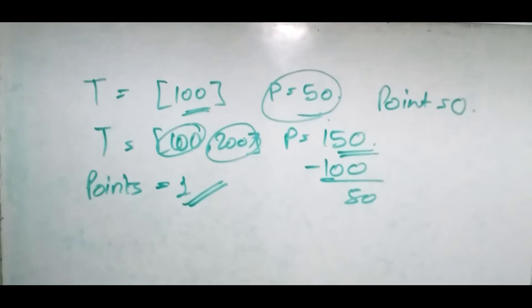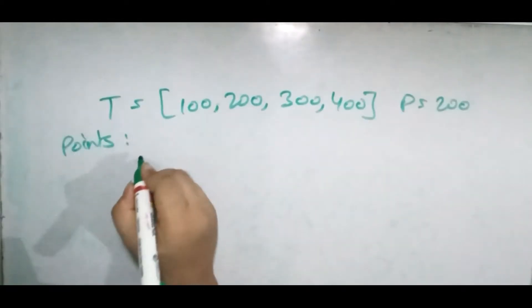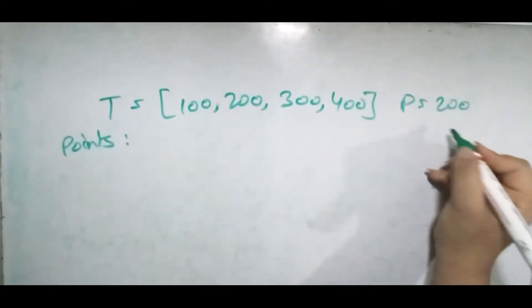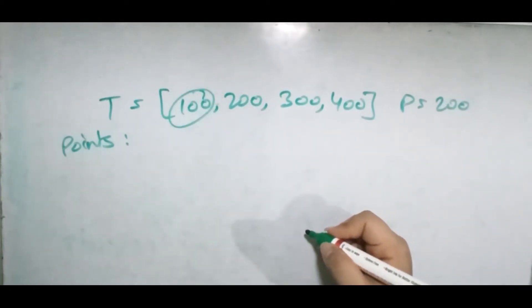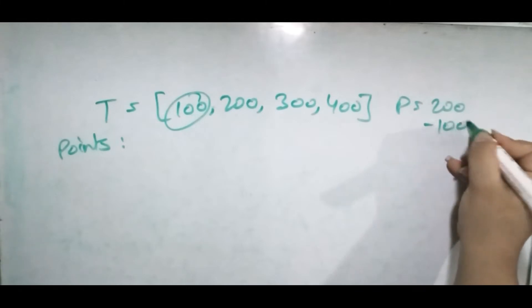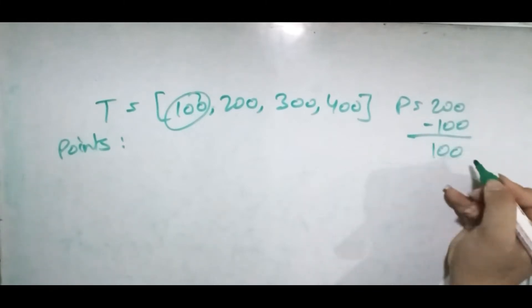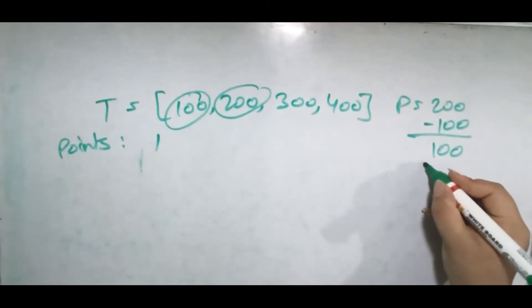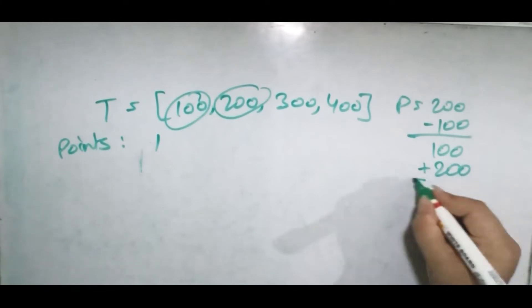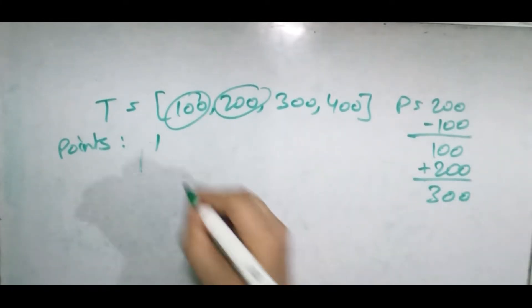Now let's see this example. Our power is 200, so we can use it face up. Our power becomes 100, points become one. Now we don't have enough power, so we should use it face down. We're increasing the power, it becomes 300, and minus one, so points again become zero.